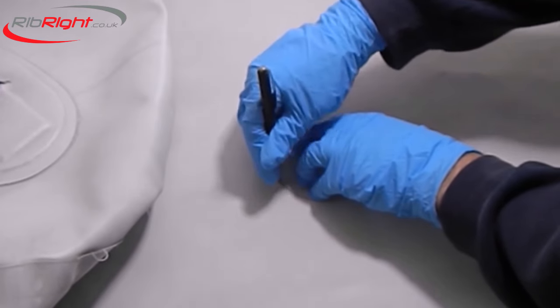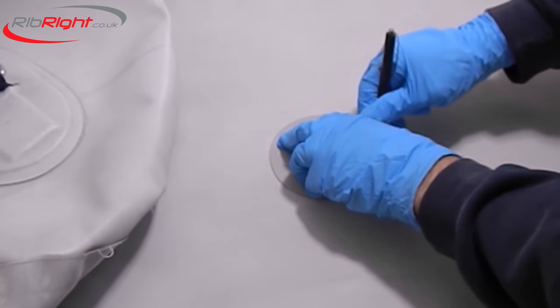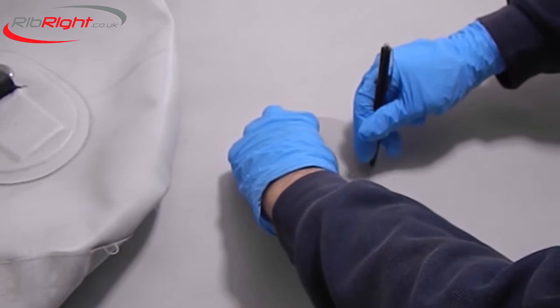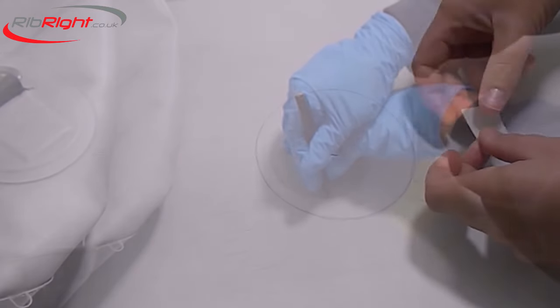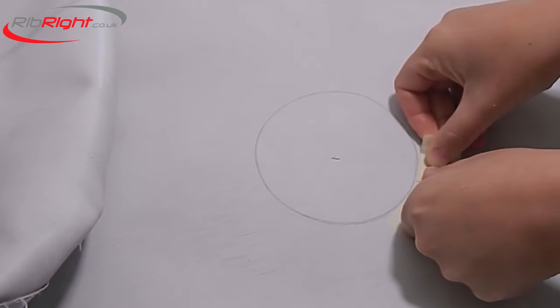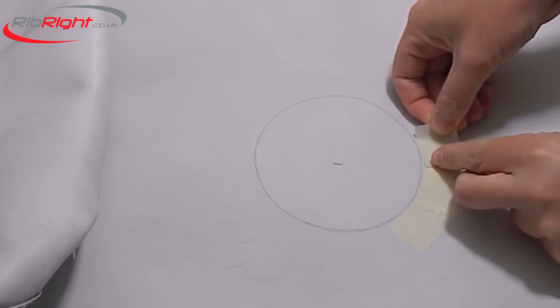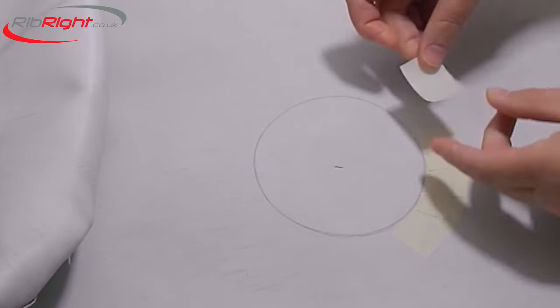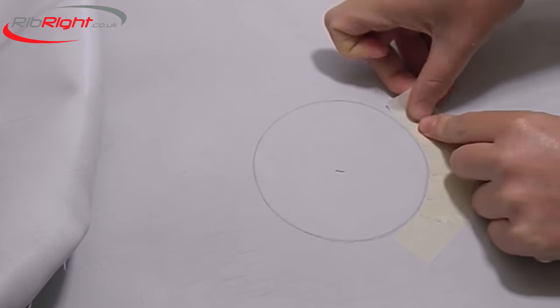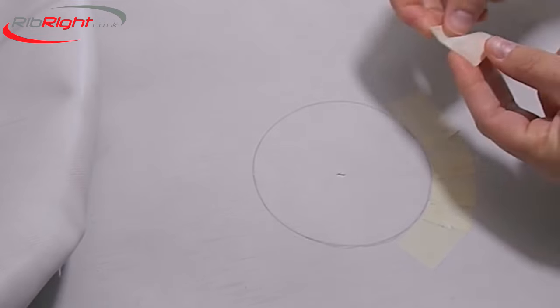Then trace around your patch using a pencil or removable marker. We suggest applying masking tape around the marked patch. This aids in the clean-up of excess adhesive later on. Always apply the masking tape, leaving a 2mm gap to allow for the natural stretch of the fabric.